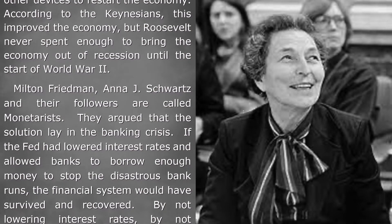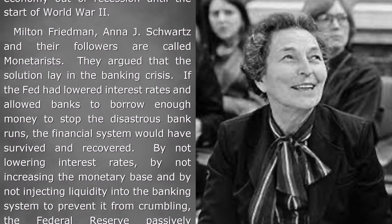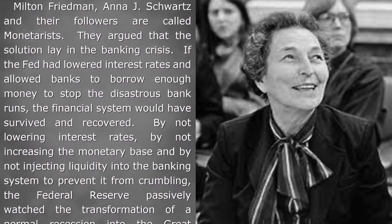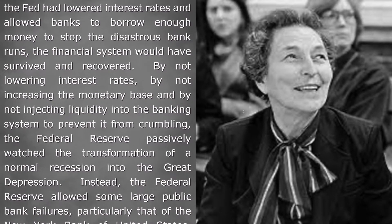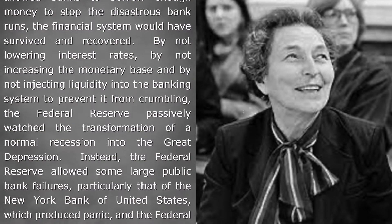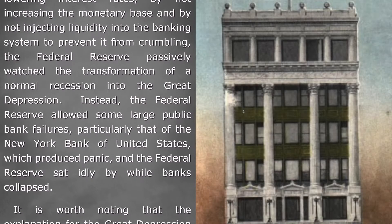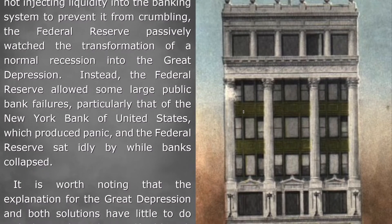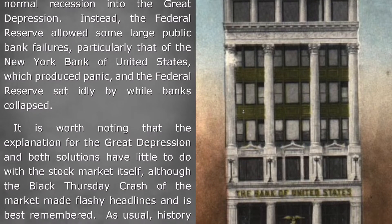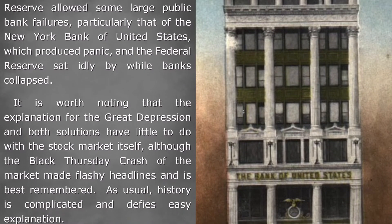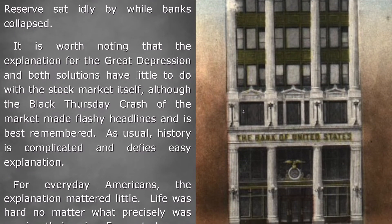Milton Friedman, Anna J. Schwartz, and their followers are called monetarists. They argued that the solution lay in the banking crisis. If the Fed had lowered interest rates and allowed banks to borrow enough money to stop the disastrous bank runs, the financial system would have survived and recovered. By not lowering interest rates, by not increasing the monetary base, and by not injecting liquidity into the banking system to prevent it from crumbling, the Federal Reserve passively watched the transformation of a normal recession into the Great Depression. Instead, the Federal Reserve allowed some large public bank failures, particularly that of the New York Bank of the United States, which produced panic, and the Federal Reserve sat idly by while banks collapsed. It is worth noting that the explanation for the Great Depression and both solutions have little to do with the stock market itself, although the Black Thursday crash of the market made flashy headlines and is best remembered.